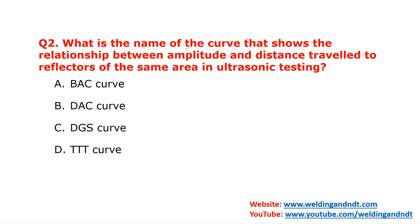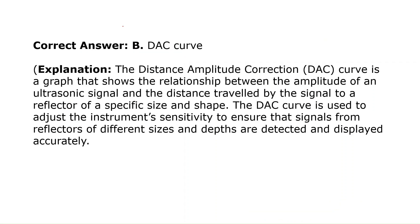Question number 2: what is the name of the curve that shows the relationship between amplitude and distance? There is a curve in UT that shows the relationship between amplitude and distance traveled to reflectors of the same area. That curve is called the DAC curve — option B is the correct answer. The full form of DAC curve is Distance Amplitude Correction curve, which is often asked in interviews.